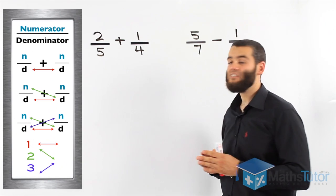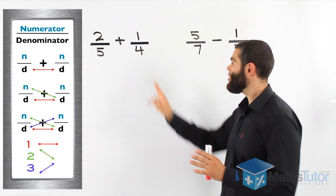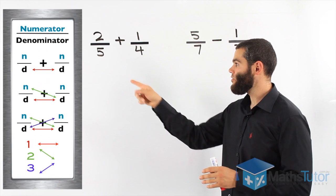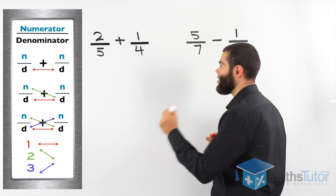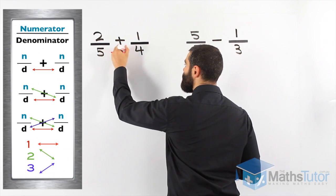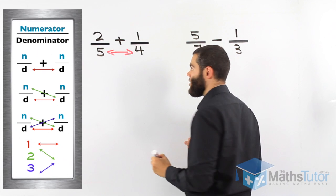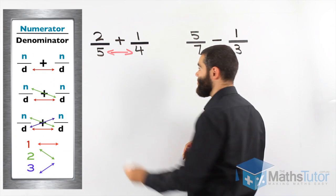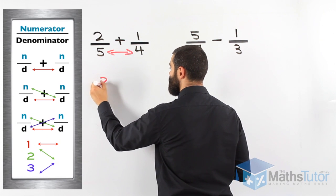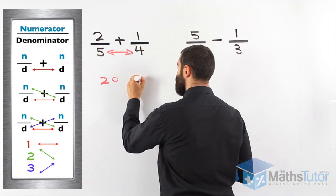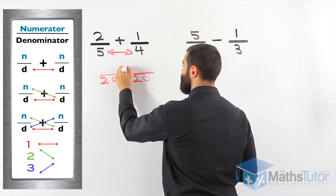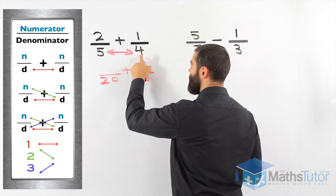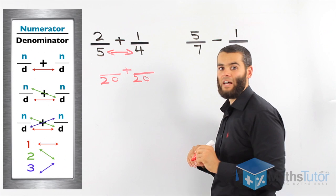Let's see it in action. Two fifths plus one quarter. Hang on, the denominators are different. We have to follow this process. Very easy. Well, let's start. The first step is to multiply the denominators together. Five times four is 20. We have our plus. Five times four, 20. That is our common denominator.